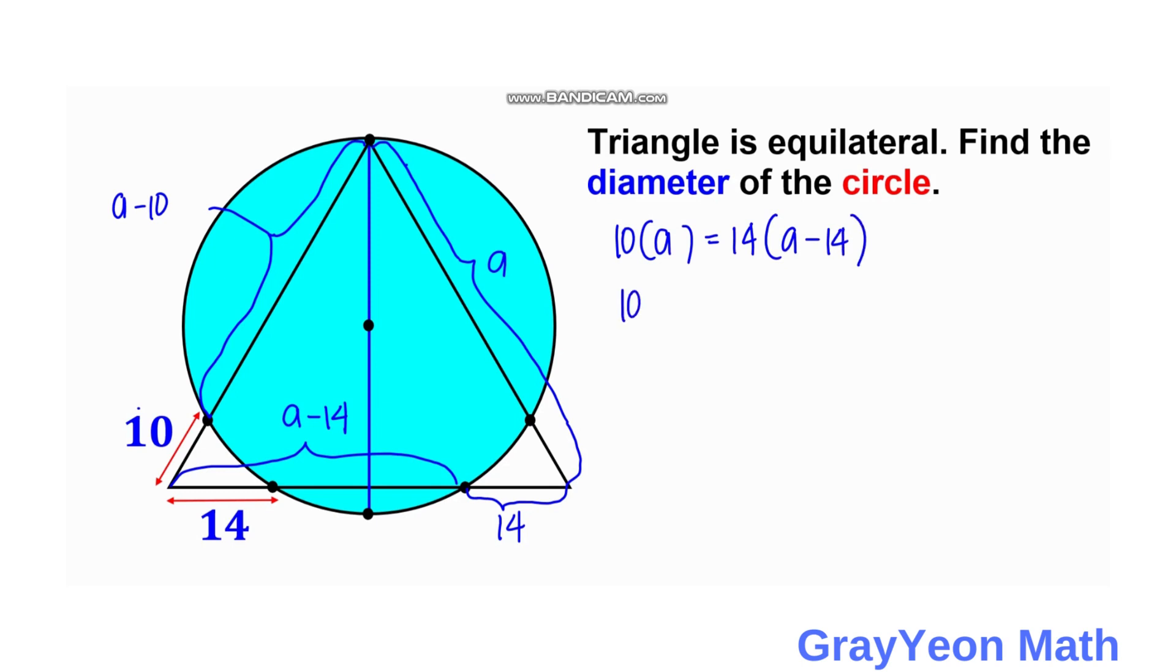So we have 10A is equal to 14A minus 196. So 14A minus 10A is equal to 196, which is 4A equals 196. So if we divide both sides by 4, we have 196 divided by 4. That will be 49. A is equal to 49 units for the side of this triangle.